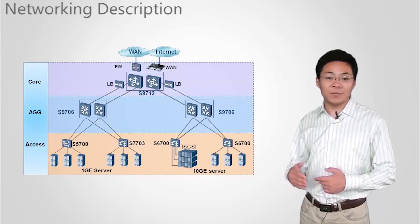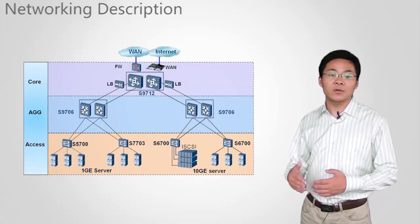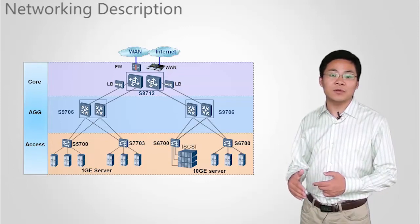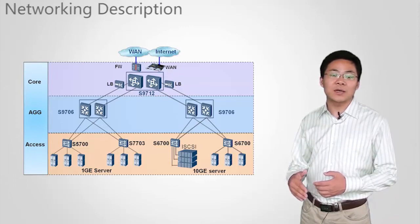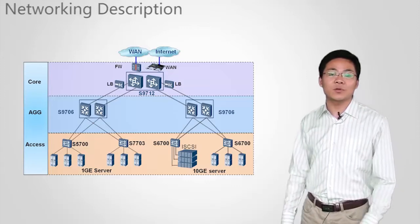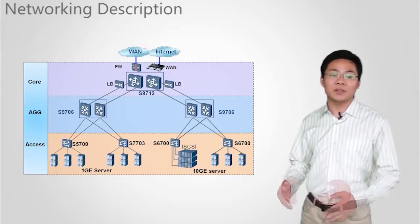S9700 switches have BC series boards with large caches and SPUs that support load balancing. These features allow S9700 switches to process traffic bursts easily.